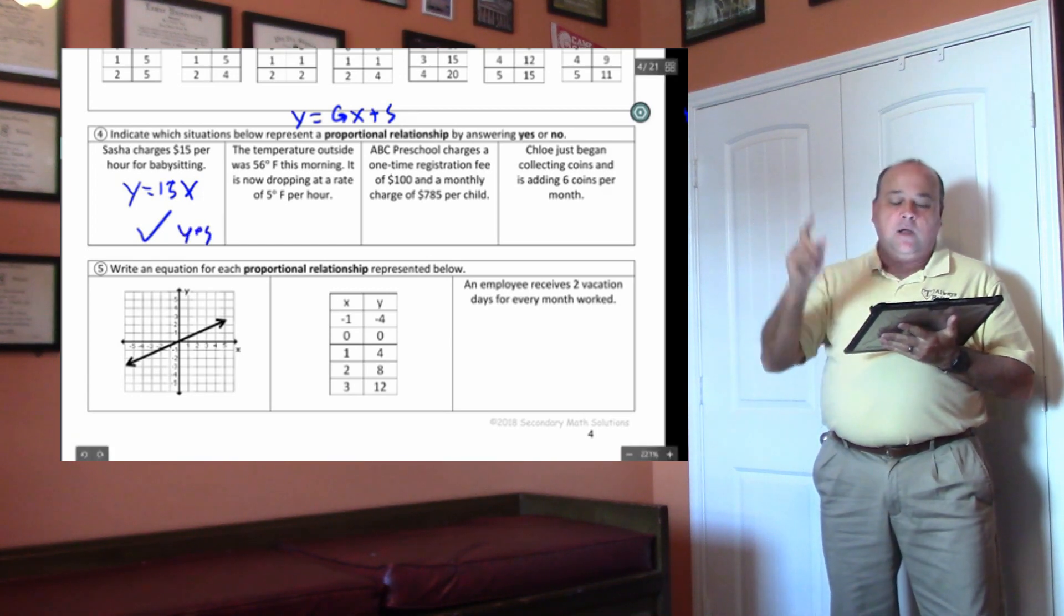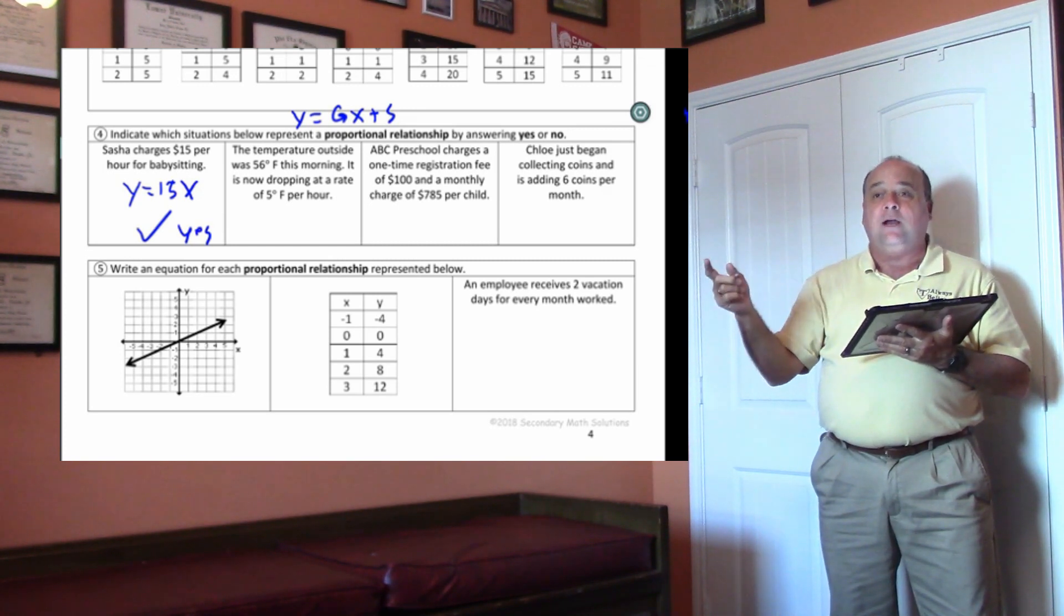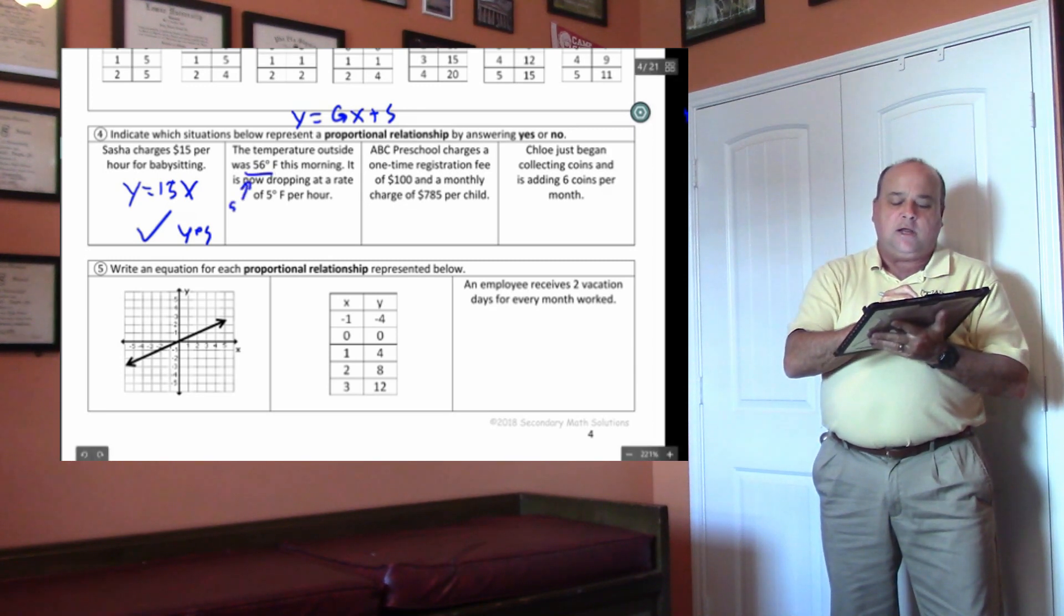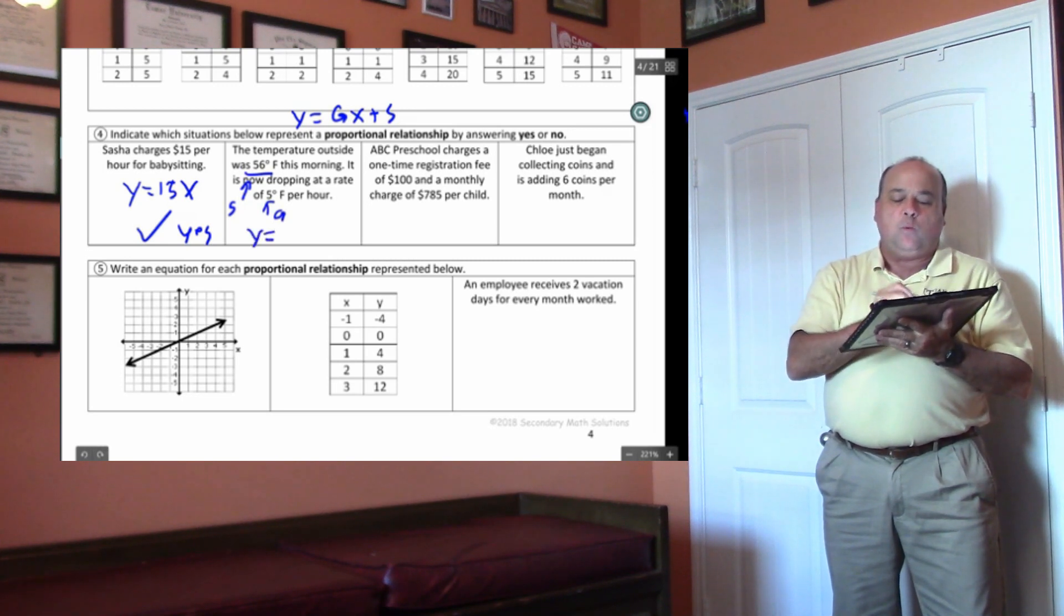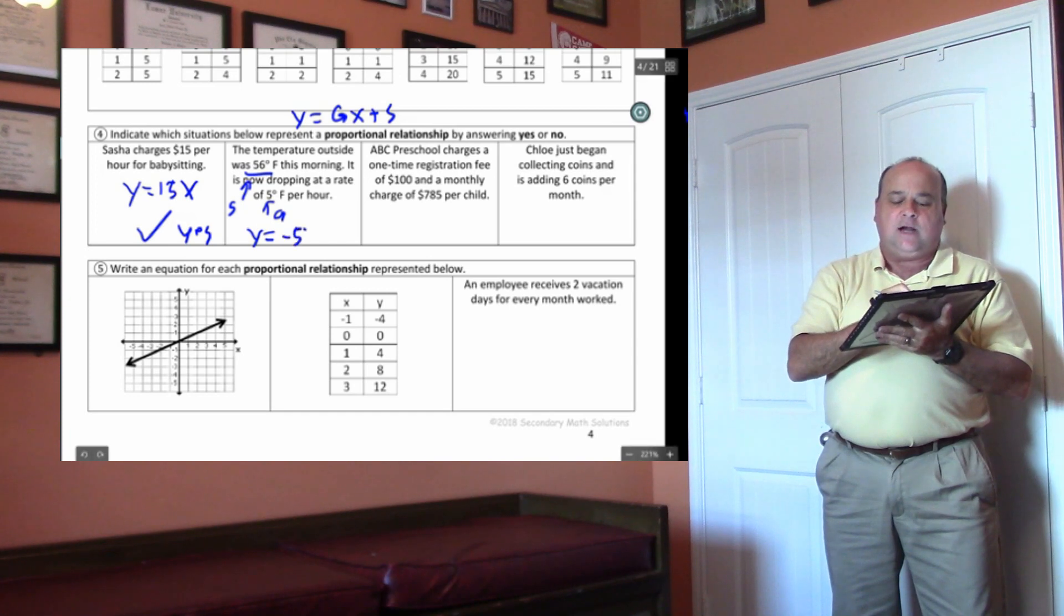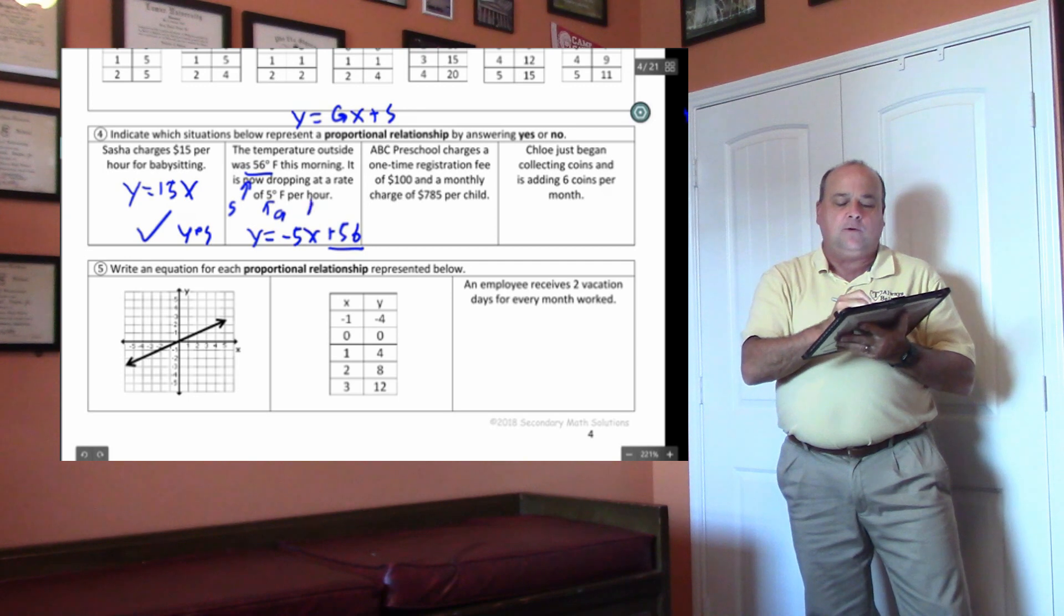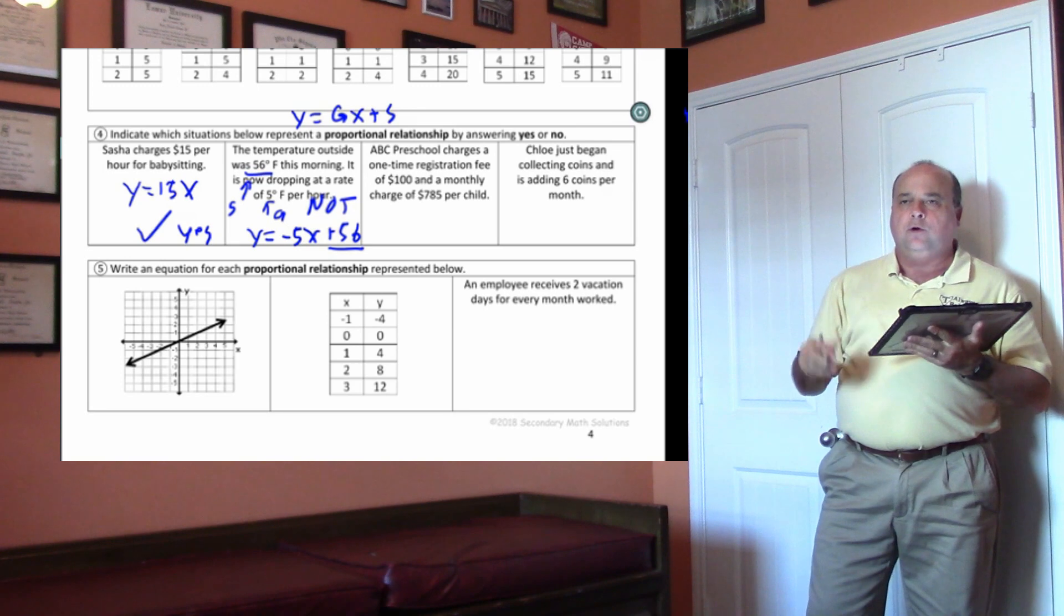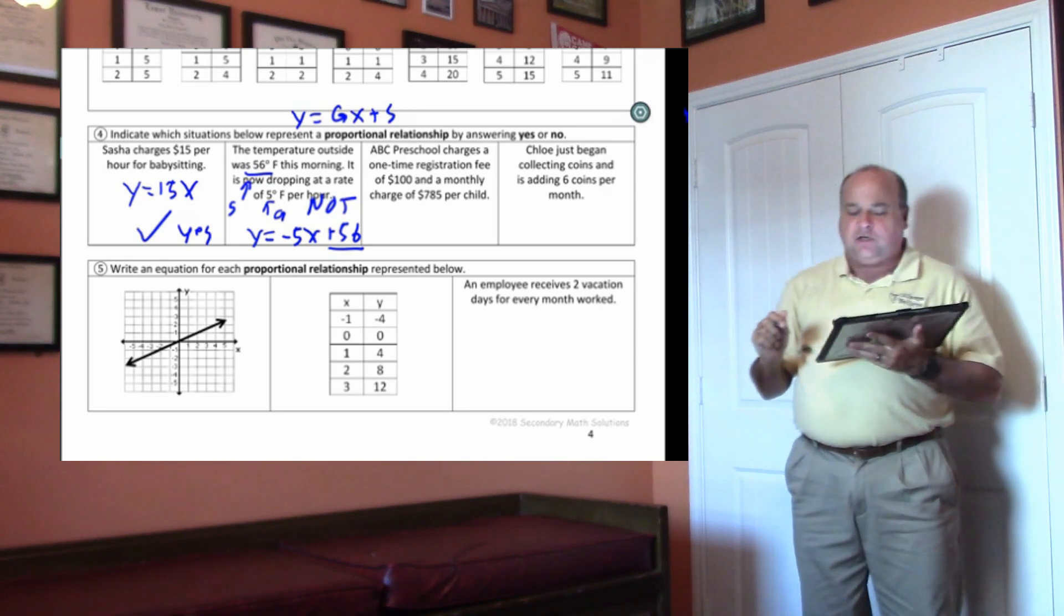On the second problem, the temperature outside was 56 degrees this morning. It is now dropping at a rate of 5 degrees per hour. This would be your starting number. This would be the growing number, wouldn't it? This equation would be y equals, the temperature's not going up, it's going down. So negative 5x plus 56, right? This has a starting number, so it is not direct variation. I'm going to let you finish the last two on your own.